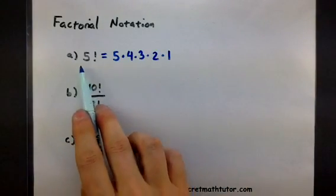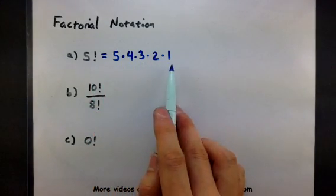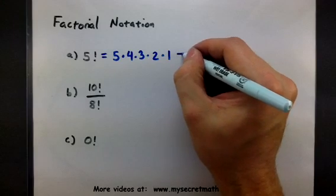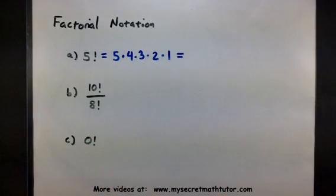So when you see something like 5 factorial, it really means 5 times 4 times 3 times 2 times 1. And you can see it's a very compact way to write this entire string of numbers.